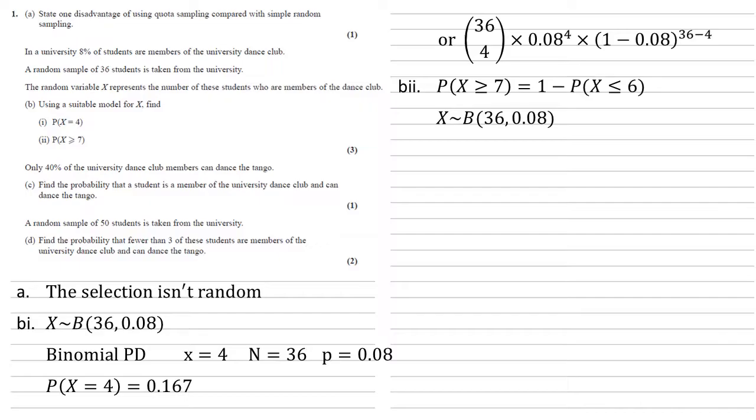We're using the same binomial distribution as before. This time on the calculator, we're going to use binomial CD, the cumulative, because we're doing smaller than or equal to. And our X equals 6, the thing we're trying to find smaller than. Our N is still 36 and our probability is still 0.08. Putting those all in gives us a probability of 1 minus 0.97777, which gives us 0.0222.